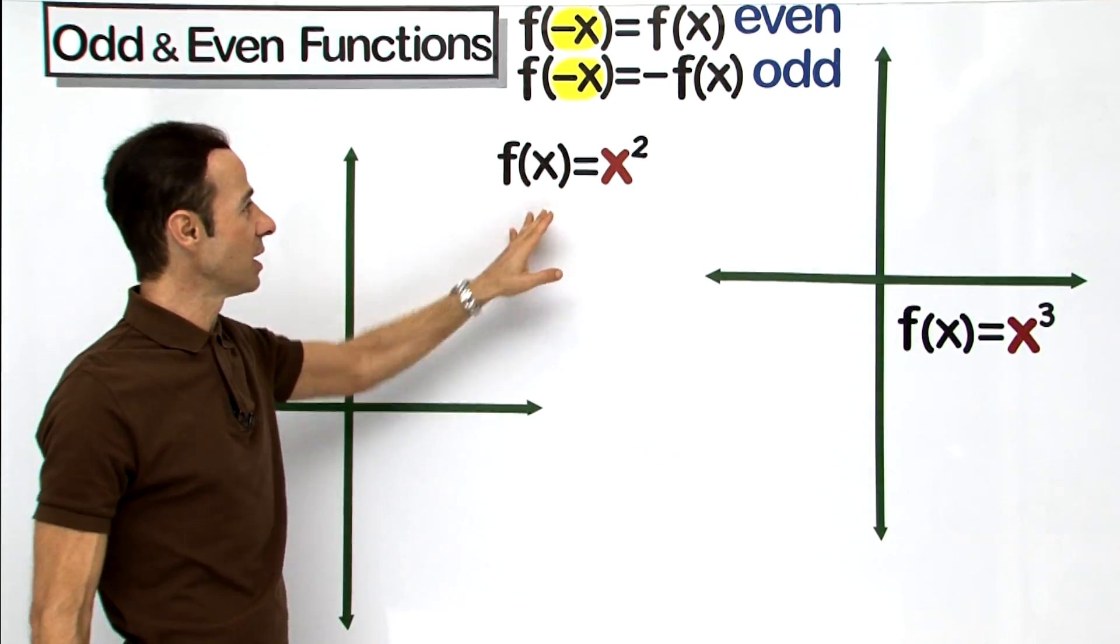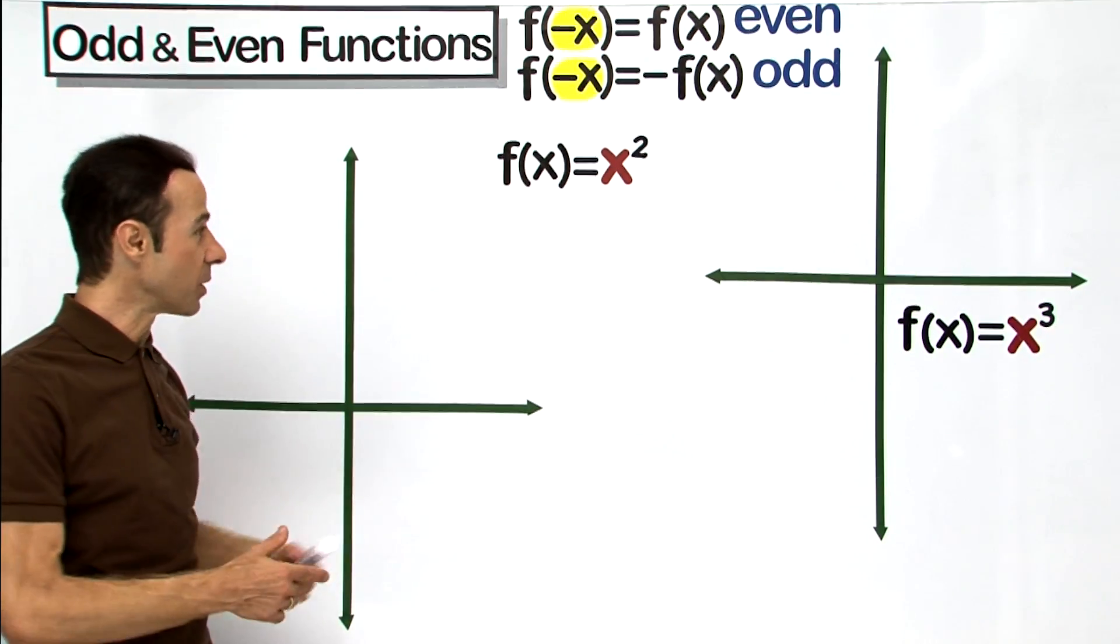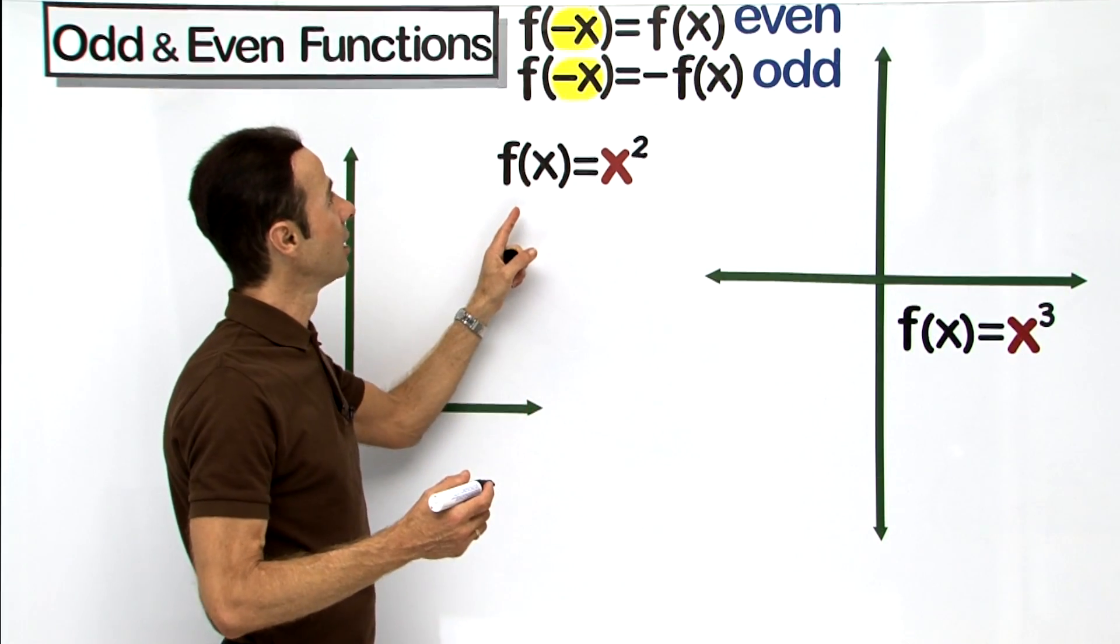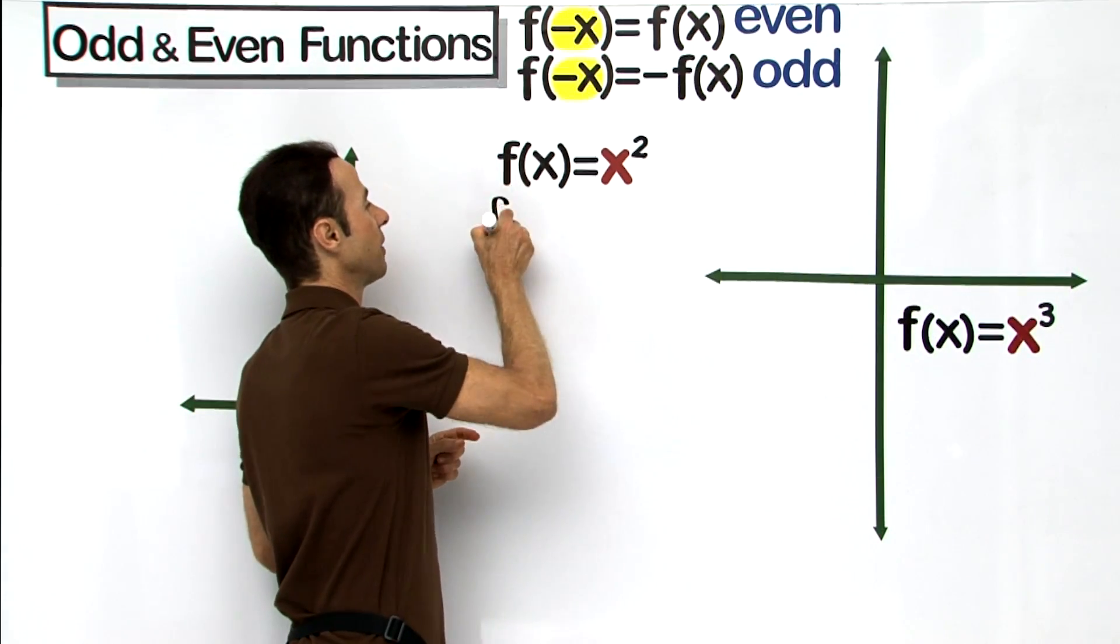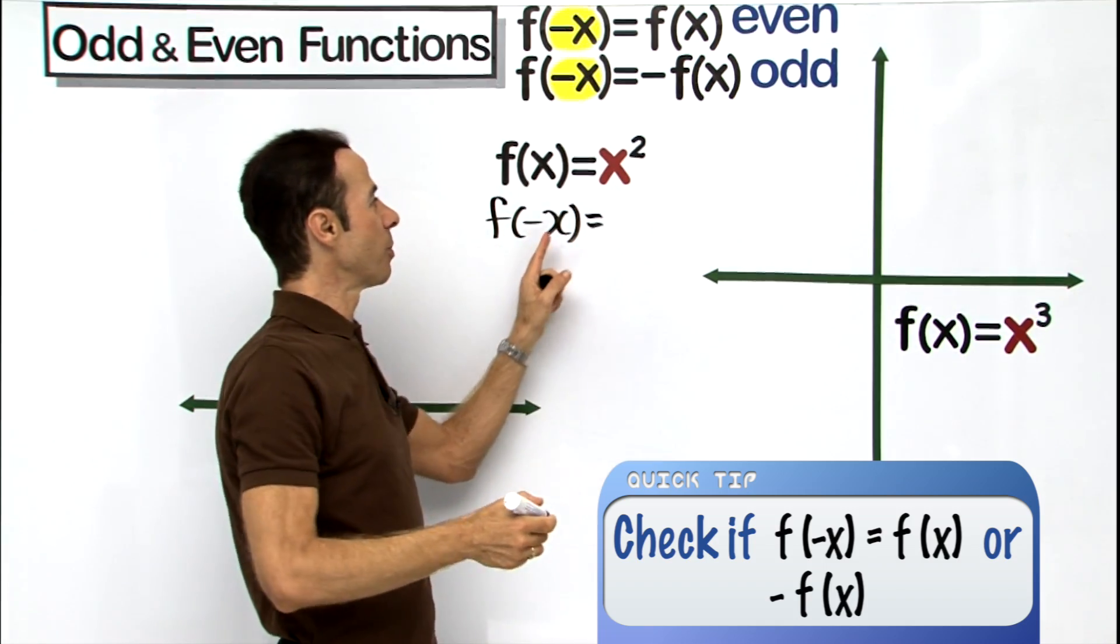So let's have a look at how this works. The first one here is f(x) equals x squared, let's see if it is odd or even using algebra. So let's find out, let's put in f(-x) and that is going to equal when we put negative x in there, simply negative x all squared.